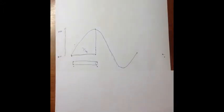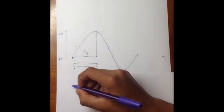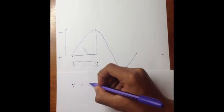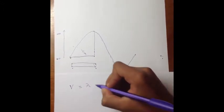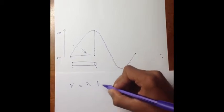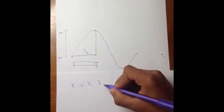We also know that the speed of sound, we'll call it the letter V, is equal to the wavelength, represented by the Greek letter lambda, times by the frequency, represented by F.